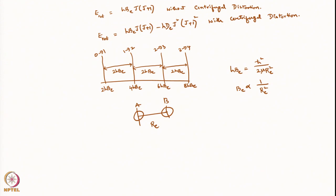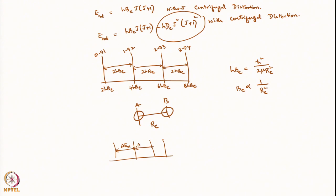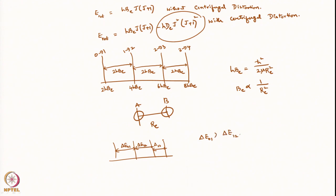When centrifugal distortion is present, it affects the larger J transitions more than the lower J transitions. What happens is the lines become more and more packed — the energy difference between subsequent lines keeps decreasing: ΔE(0,1) > ΔE(1,2) > ΔE(2,3). By looking at this pattern, one can also determine the centrifugal distortion constant, which is generally D_E ≈ 10⁻⁴ × B_E.